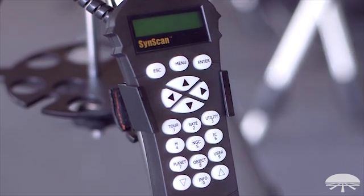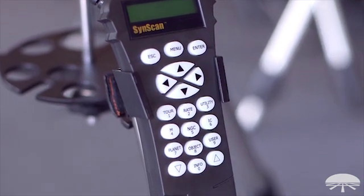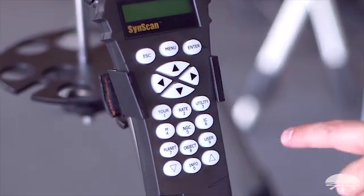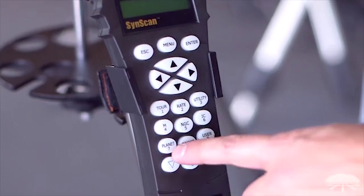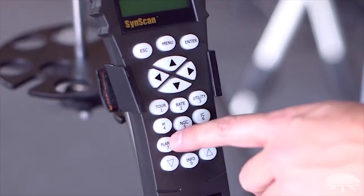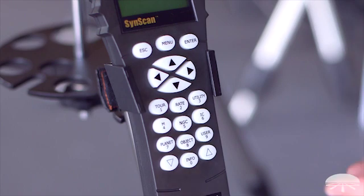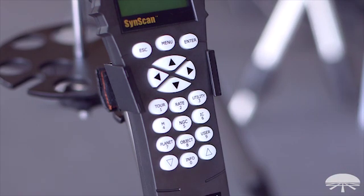The hand controller is the heart of the GoTo system. It's got the entire database of 42,000 objects. The starting point that most beginners use is the planet list. Just press planet, cycle through the list. It will only show you the planets that are up for that time of night.